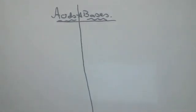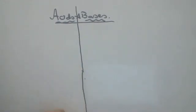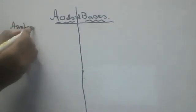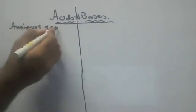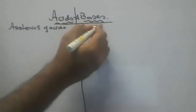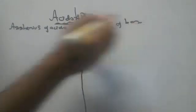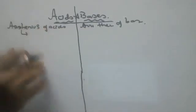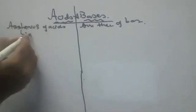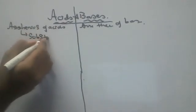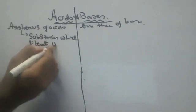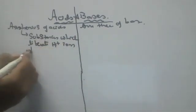Many people put forward many theories regarding acids and bases. Among the most important ones, the first is Arrhenius theory. Arrhenius was the first scientist in this group. He said acids are substances which liberate H+ ions when dissolved in water.